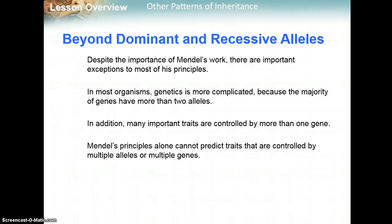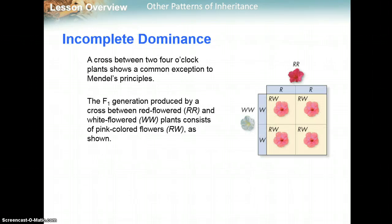In addition, many important traits are controlled by more than one gene. Mendel's principles alone cannot always predict traits that are controlled by multiple alleles or multiple genes. One example is something called incomplete dominance, where there's not a true dominance. We cross between these types of plants called four o'clocks, and you often see this type of exception to Mendel's principles.